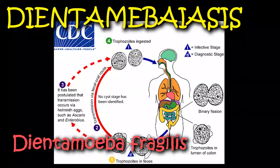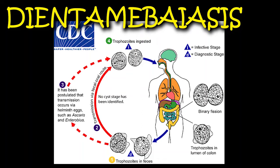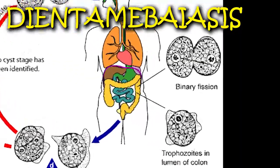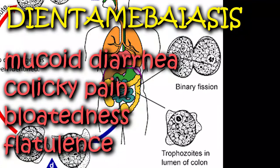Dientamoeba fragilis is an intestinal protozoan that was first identified as an amoeba but later reclassified as a flagellate. Morphologically, it looks like Trichomonas but without the flagella. Similar to Trichomonas, and unlike most intestinal protozoans, it only occurs as a trophozoite. Dientamoeba fragilis usually resides within the large intestines, where it causes intermittent mucoid diarrhea, colicky abdominal pain, abdominal tenderness, bloating sensations, and flatulence.